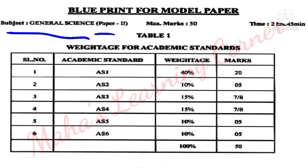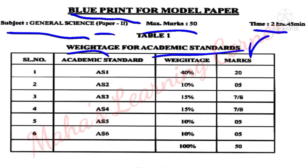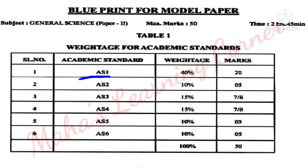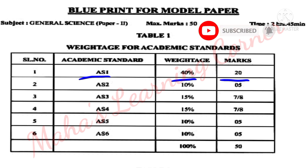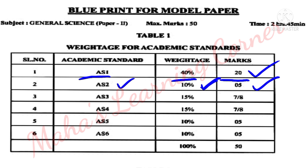General Science Paper 2 blueprint: maximum marks 50, time 2 hours 45 minutes. The first table shows academic standards-wise weightage. Academic Standard 1 (AS1) is concept understanding, which carries 40 percent weightage — that is 20 marks out of 50.